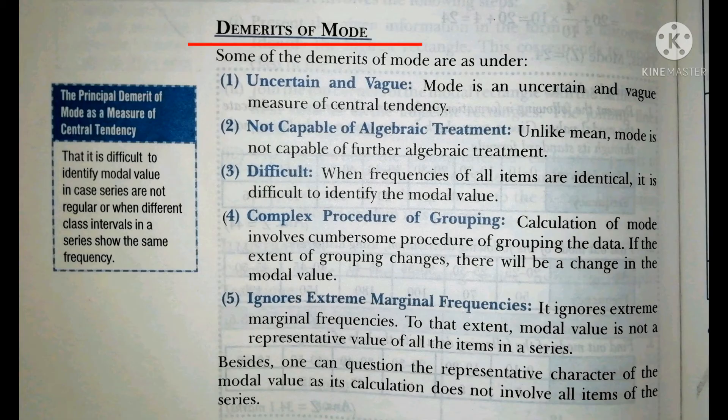Next are the Demerits of Mode. Some of the demerits of mode are as follows. Number one is Uncertain and Vague. Mode is an uncertain and vague measure of central tendency.